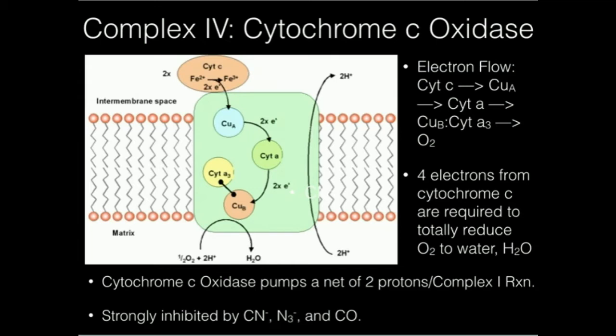So you see the electron coming here. It's initially going to go to a copper cofactor right here, a copper A. That's just the name designation. Then it's going to go to cytochrome A here, and then ultimately to this binuclear center referred to as cytochrome A3 and copper B.